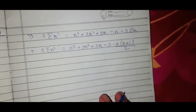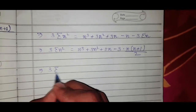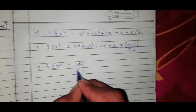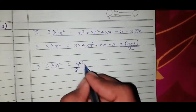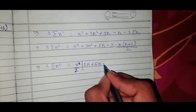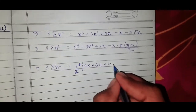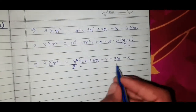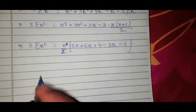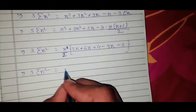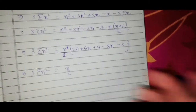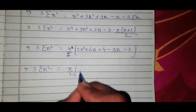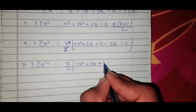So Σn = n(n+1)/2. This implies 3·Σn² = n³ + 3n² + 2n. Taking n/2 as common: multiply through by 2 to get 6n, 6n², and then adjusting terms. So 3·Σn² = (n/2)(2n² + 6n + 4 - 3) which simplifies. After multiplying: 3·Σn² = (n/2)(2n² + 6n - 3 + 3n + 1) = (n/2)(2n² + 2n + n + 1).